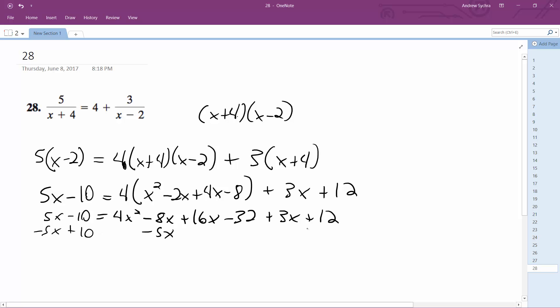add 10 and what we're left with to work with is 4x squared plus 6x minus 10 equals 0